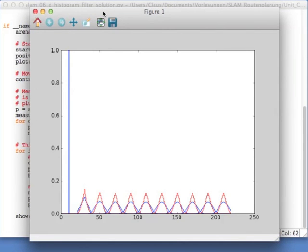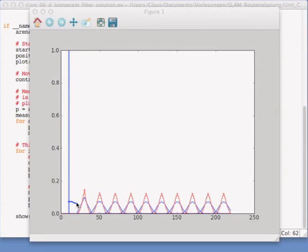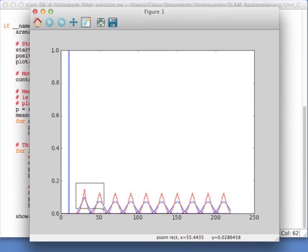So now running it, this is how it looks like. So we start with our unit peak. And then to move, propagate this into this triangle, which is then improved by the update. So in the update, we get a higher peak. So the robot is more certain about its position. Now let's have a closer look.